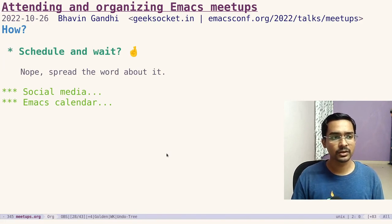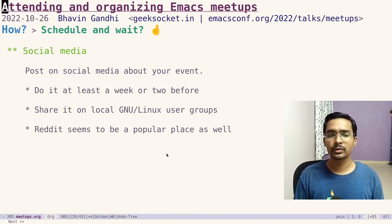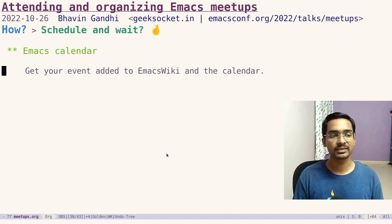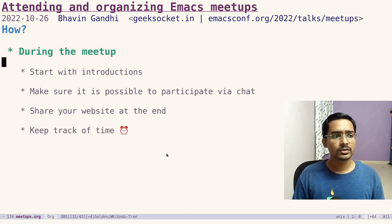Once you've scheduled the meetup, don't just wait — spread the word. Post on social media about your event, usually a week or two before so people can plan. Share it on local GNU/Linux user groups via their IRC channels and mailing lists. Reddit is also a popular place to post. Add your event to the Emacs calendar and EmacsWiki, as we saw earlier — the instructions are given there, so make sure you add your event to those places.